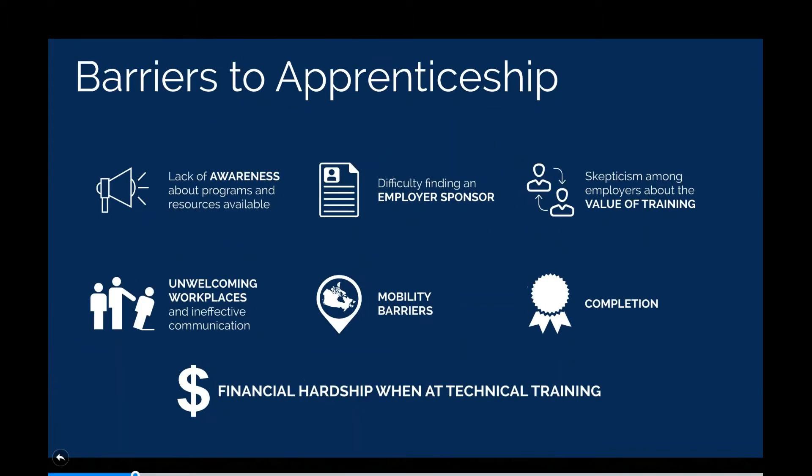We're interested in tracking stakeholder awareness of the loan and collecting your thoughts about whether it's achieving its intended purpose — to overcome barriers to apprentices returning to school for subsequent periods of technical training. CAF's research has identified a number of barriers that apprentices face on their path to certification. The lack of awareness about apprenticeship as a post-secondary option is something we hear about all the time, despite efforts underway in every part of Canada to raise awareness from groups like Skills Canada, Jurisdictional Apprenticeship Authorities, school boards, unions, and nonprofit groups.